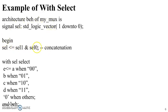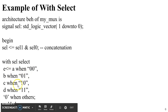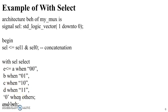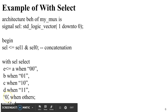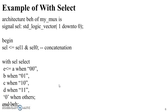Using the same signal names, the multiplexer is rewritten with with-select: 'with sel select' — A is assigned when sel is 00, B when sel is 01, C when sel is 10, D when sel is 11, and 0 is assigned when others. This is the same multiplexer program rewritten using with-select.